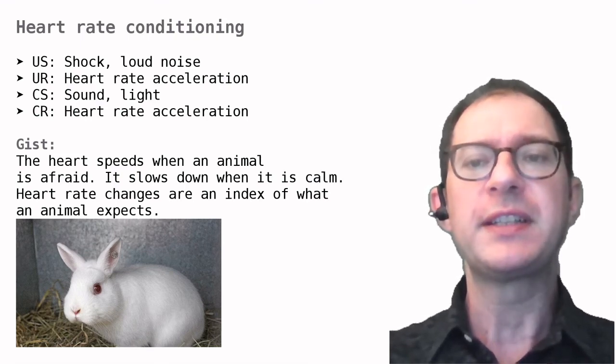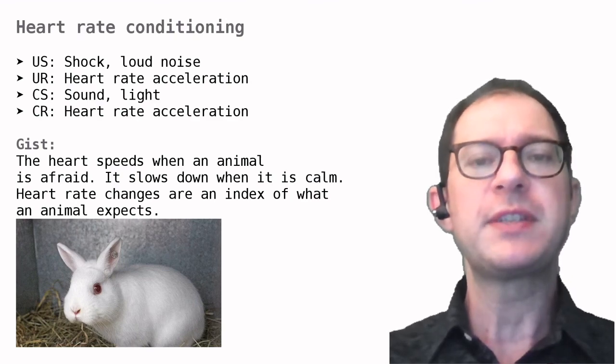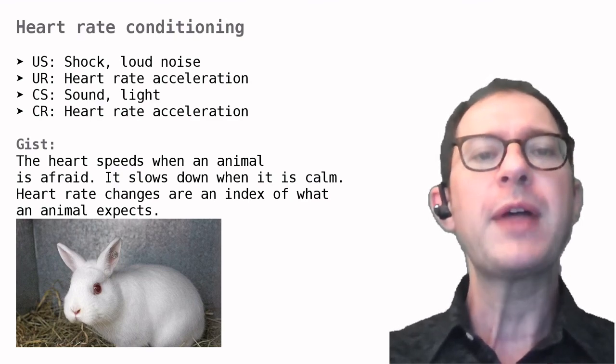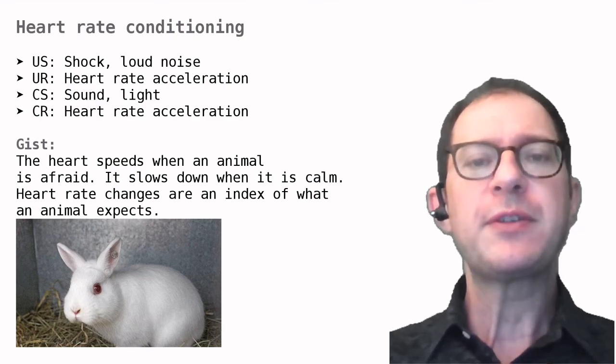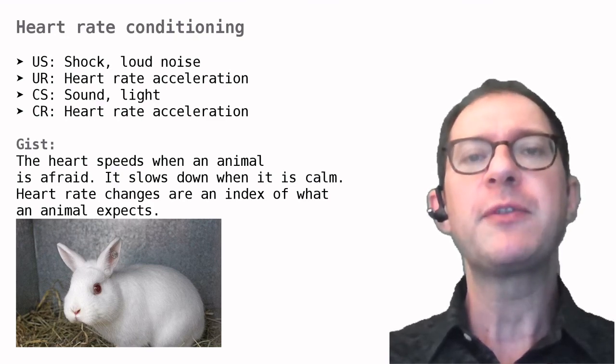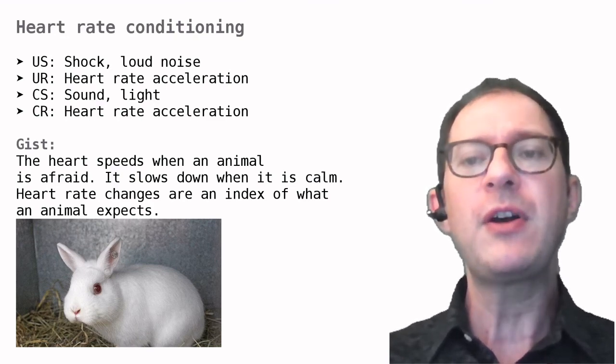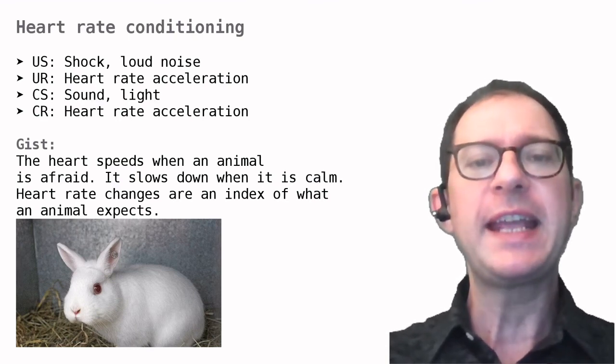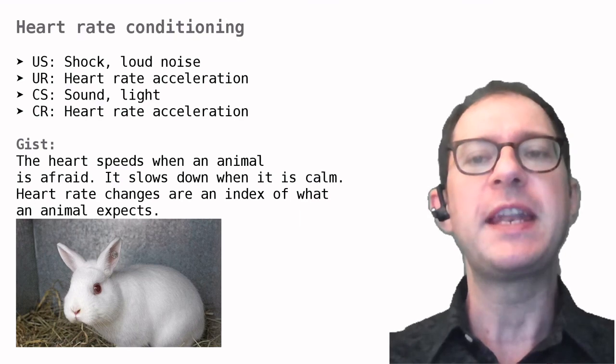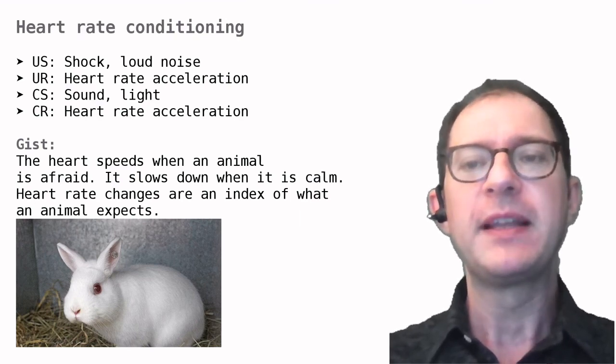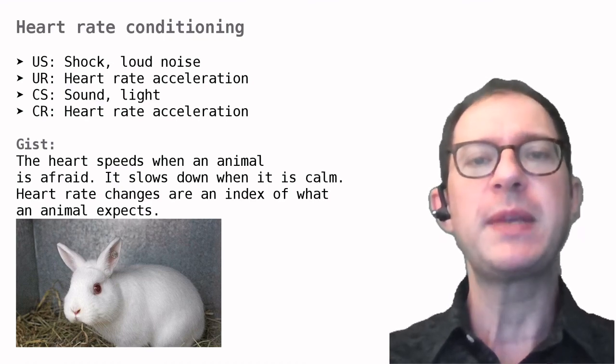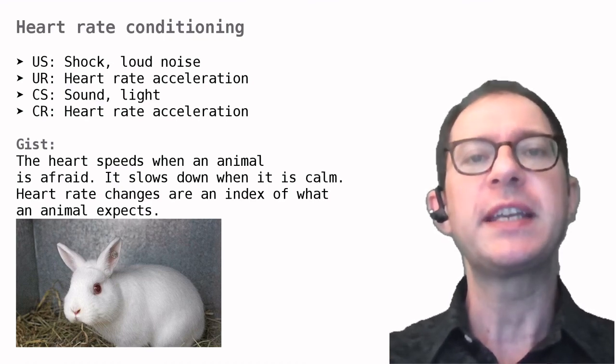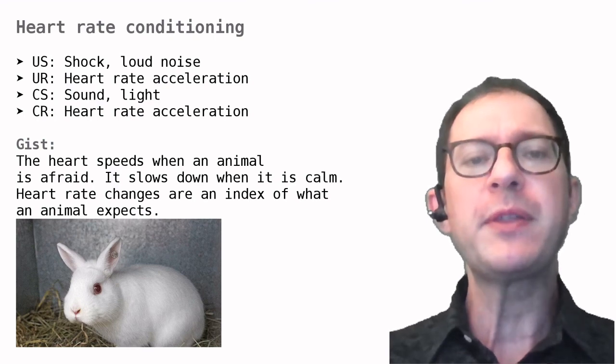I am mentioning heart rate mainly because it has one interesting property. It can go both up and down. Most other conditioned responses start from zero at the beginning of an experiment and can go only in one direction. For example, an animal cannot learn to blink a negative number of times or salivate a negative amount of saliva. That heart rate can go up and down is helpful to study how conditioning can decrease behavior instead of increasing it. The frequency of breathing is another behavior that can be used in the same way.